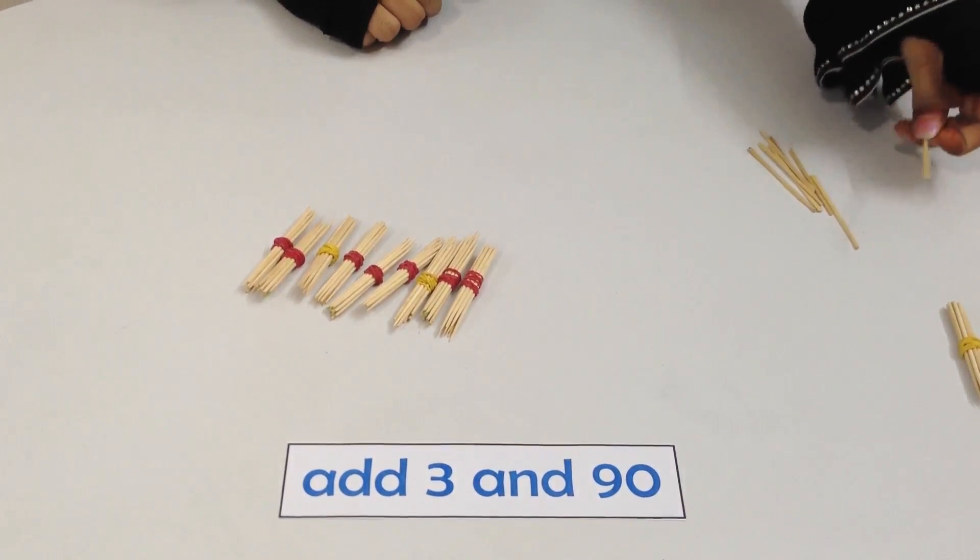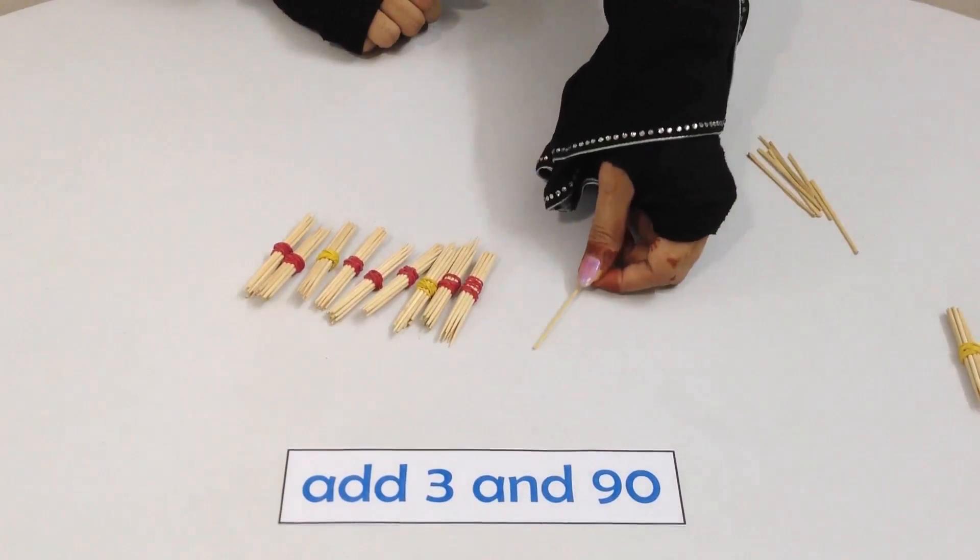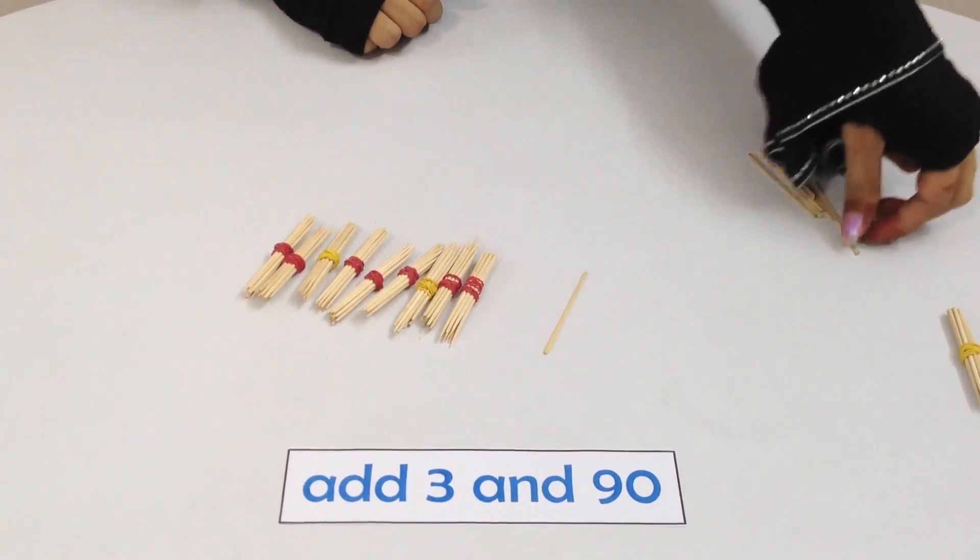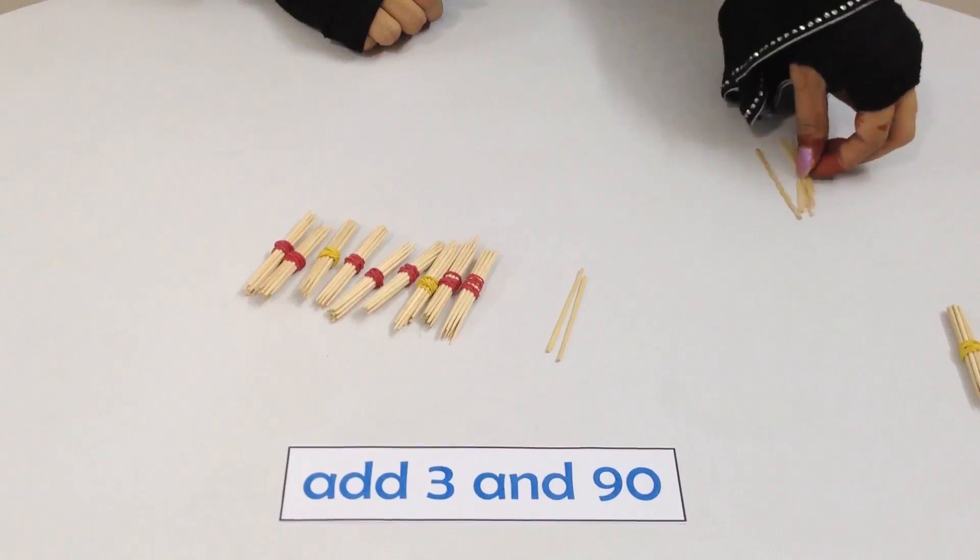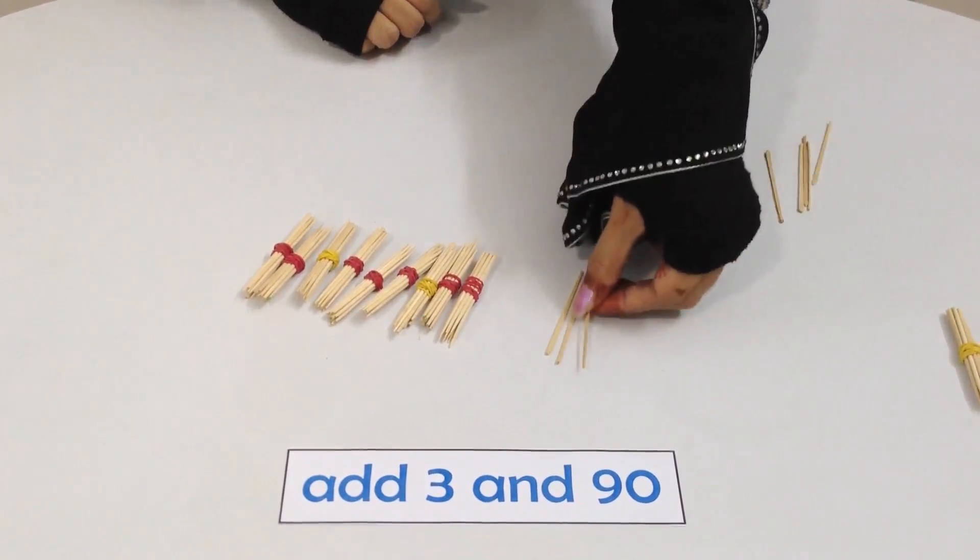And now we have to add three more, so we take single toothpicks. That's 91, 92, and 93.